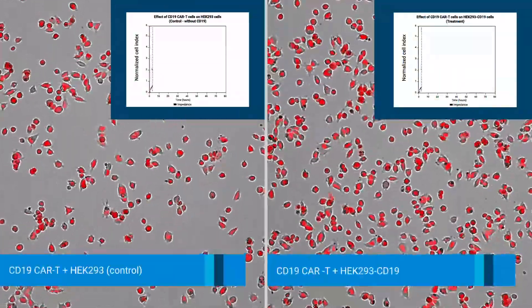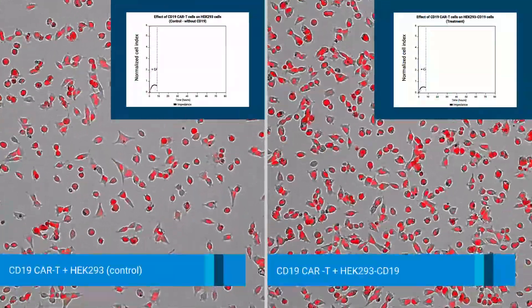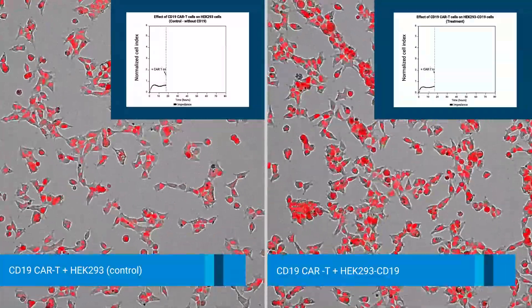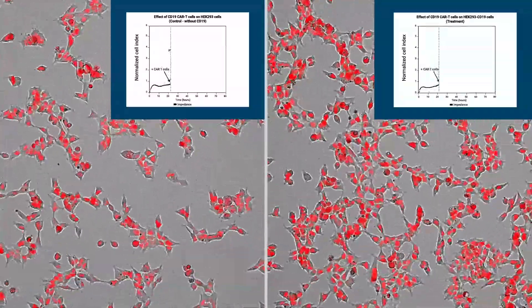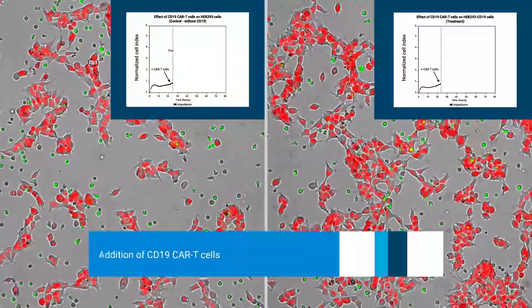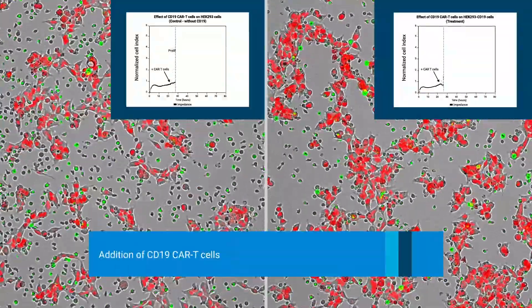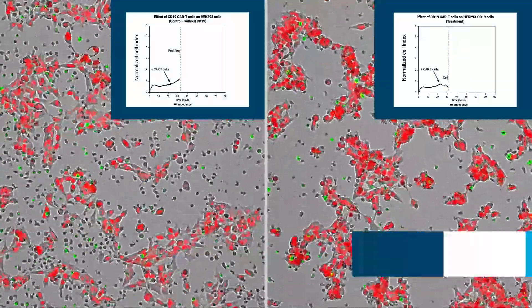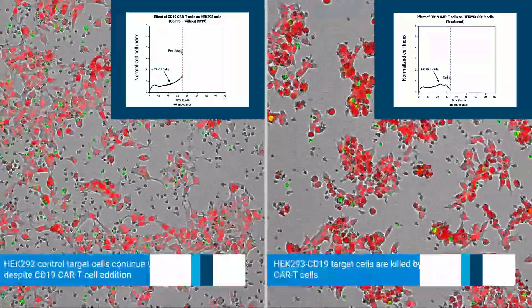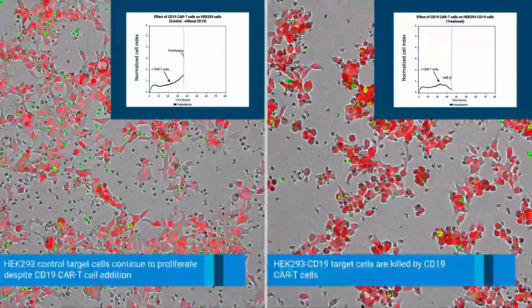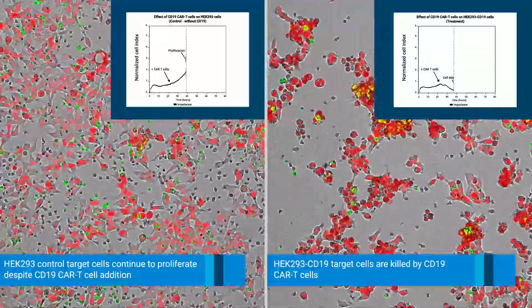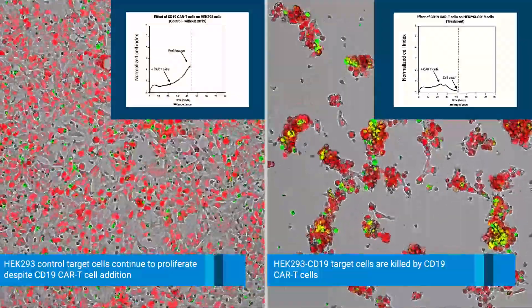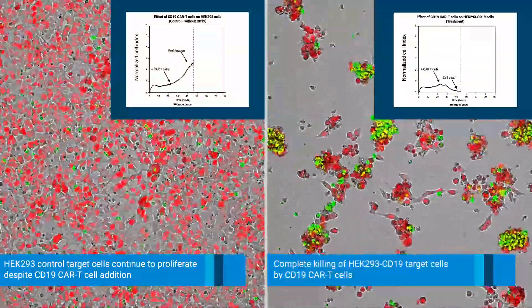Here we show both wells, with control target cells on the left and CD19-expressing target cells on the right. The control target cancer cells on the left continue to proliferate, while CD19-expressing target cells on the right are killed by CD19 CAR T cells.